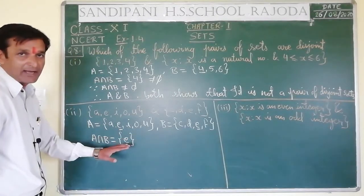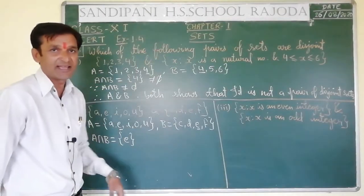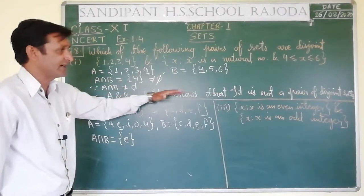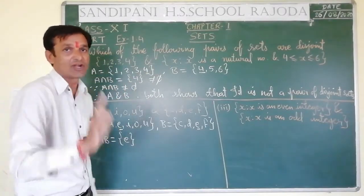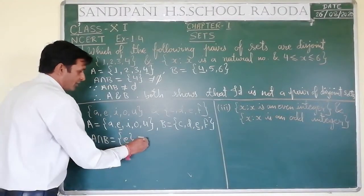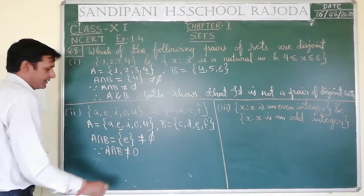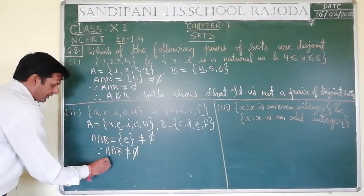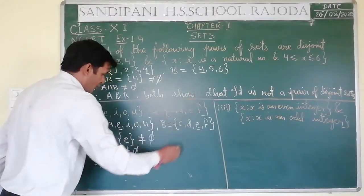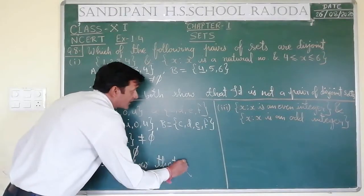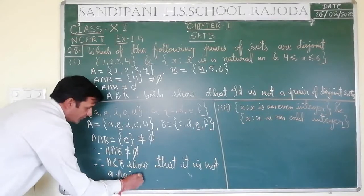If one or more elements are common, then it will not be a pair of disjoint sets — as happened in the first one. In this one also one element appeared. If elements are common in both sets then we say it is not a disjoint set. A intersection B is not equal to empty set, because A intersection B is not equal to empty set — therefore A and B show that it is not a pair of disjoint sets.